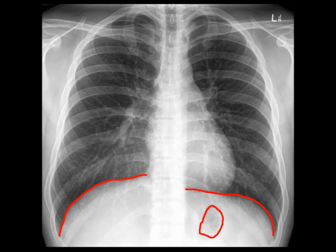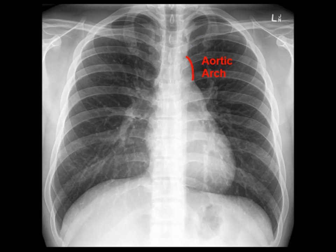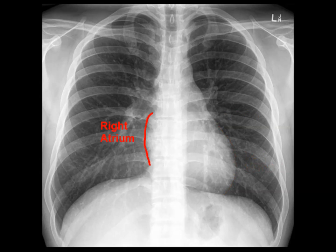Next we will look at the borders of the heart and major blood vessels, going clockwise from top to bottom. First you have the subclavian artery, then the aortic arch, the pulmonary artery, a small bit of the left atrium, the left ventricle, the right atrium, the superior vena cava, and the ascending aorta.